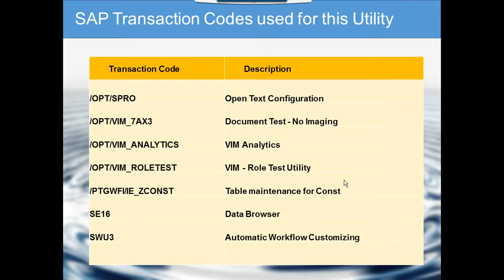The next transaction code is /opt/vim_7ax3, used to test documents. Here you can test documents without scanning an image, so that you can do back-end testing.